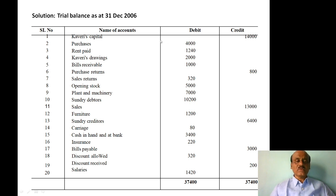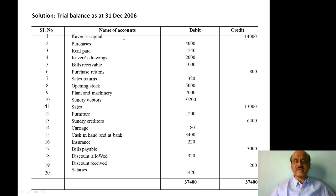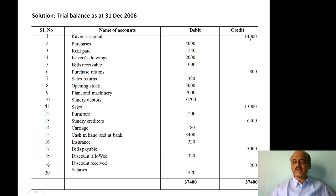Now, item by item we enter them into the pro forma with columns: name of account, debit column, and credit column. The first item is capital — it is a liability with credit balance — so 14,000 goes on the credit side.